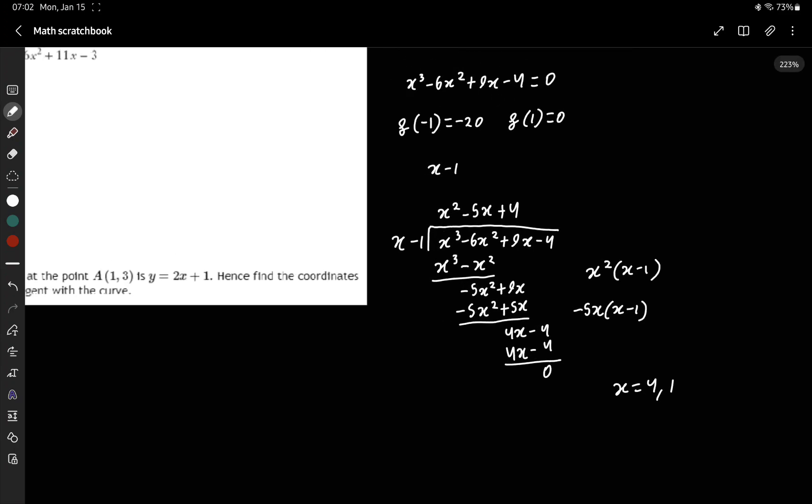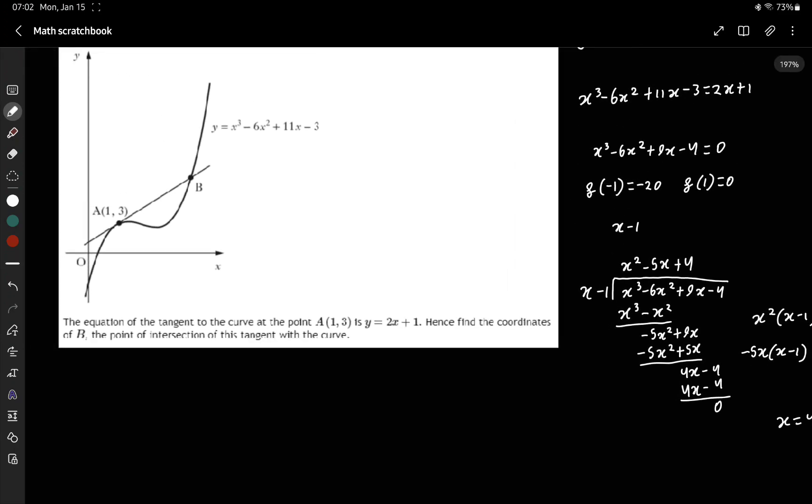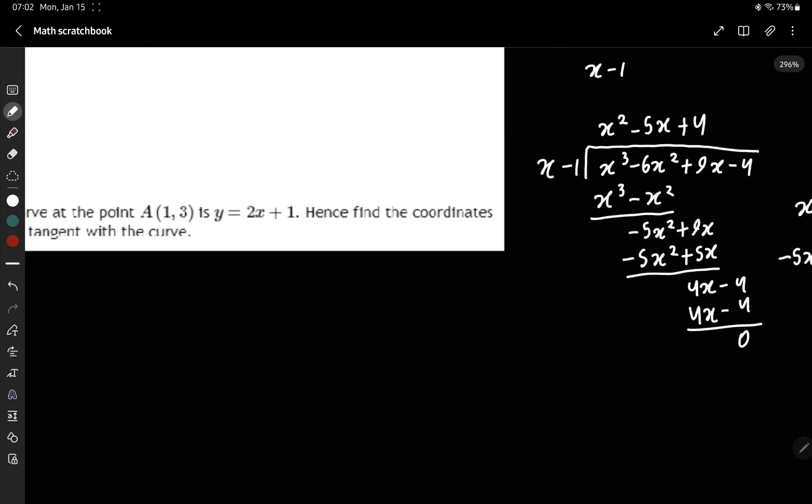To find the second point, we know the line equation is 2x plus 1.